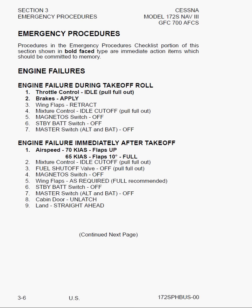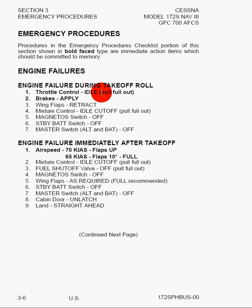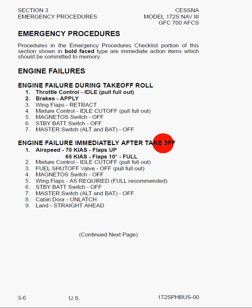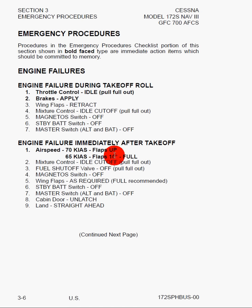Here we can see the maximum glide speed, which is 68 knots, precautionary landing with engine power speed, landing without engine power — flaps up and full flaps. In the case of engine failure during takeoff roll, it says throttle control to idle, brakes apply — and that one should be fairly obvious. For engine failure immediately after takeoff, it says 70 knots with flaps up, or 65 knots if the flaps are anywhere between 10 degrees and full.